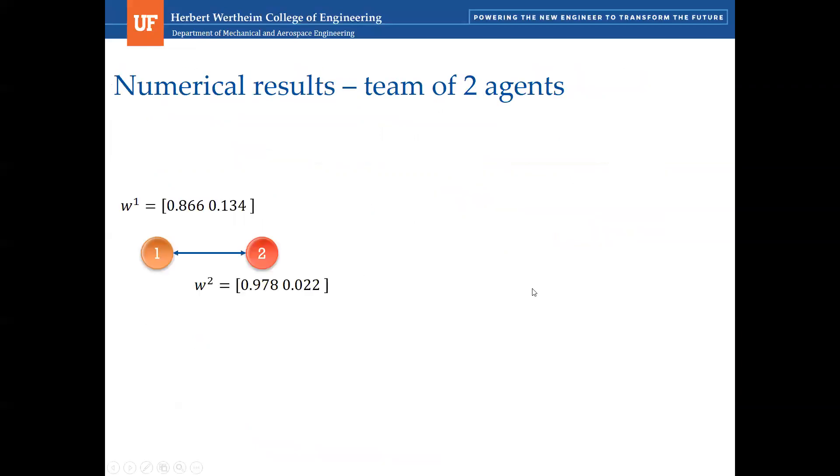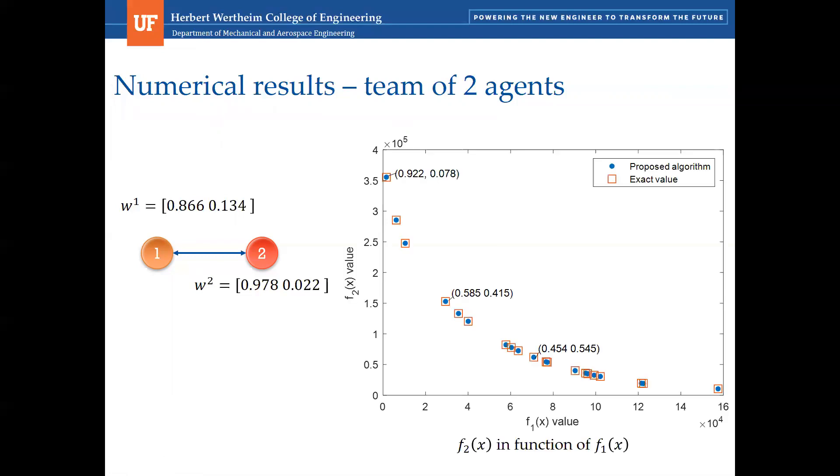Here are some numerical results. For illustrative purposes, we have a team of two agents with different initial priorities and state minimizing two quadratic functions. We'll see that the solution on the Pareto front. The solution with these initial priorities is the following here. We can see that the weights converge to the average of agent's initial weights and that the algorithm reaches a value very near the optimal value.